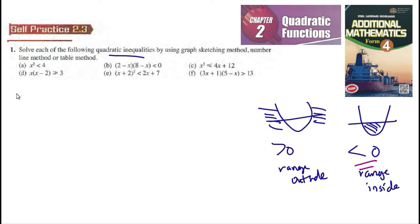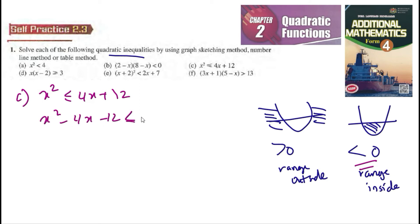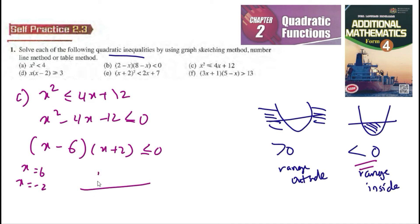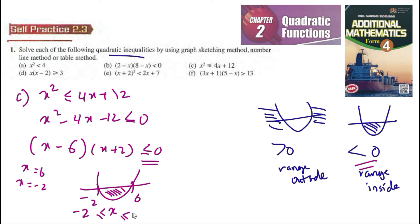For part c, x² is smaller than 4x plus 12, so x² minus 4x minus 12 is smaller than 0, which factors to (x minus 6)(x plus 2) is smaller than 0. So x equals 6 and x equals negative 2. When we sketch, we have negative 2 and 6. Since it's smaller than 0, the range is inside, so x is between negative 2 and 6 — don't forget between or equal to negative 2 and 6.